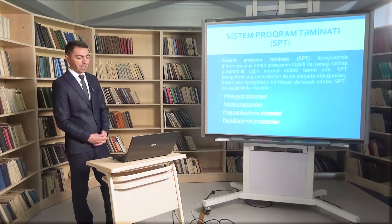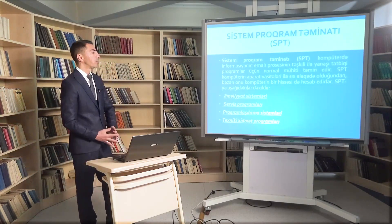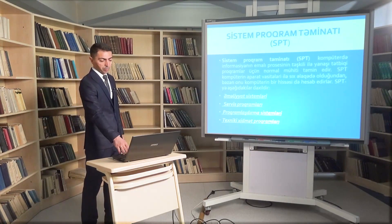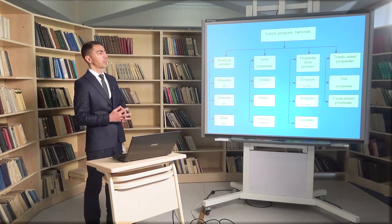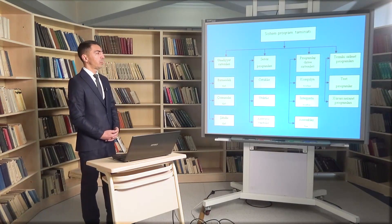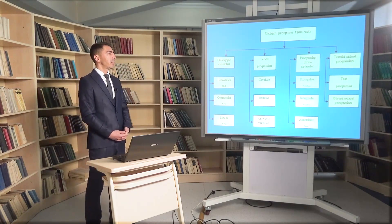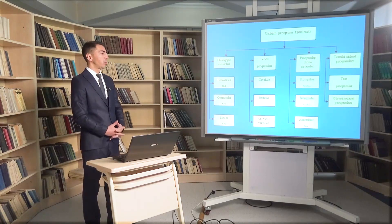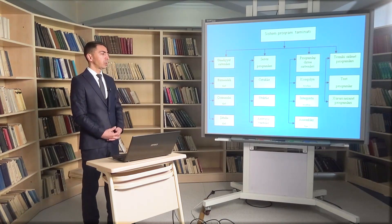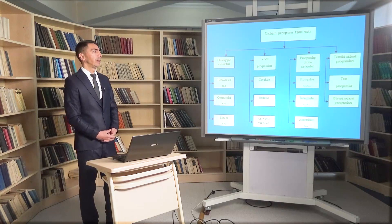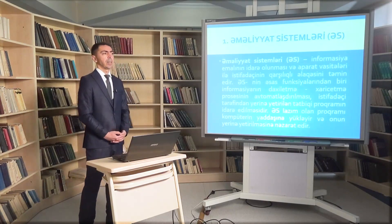Əsasən sistem proqram təminatına aşağıdakı bölmələr daxildir: əməliyyat sistemləri, servis proqramları, proqramlaşdırma sistemləri və texniki xidmət proqramları. Cədvələ nəzər salsaq, əməliyyat sistemlərinin alt bölmələrinə bir məsələli, çox məsələli, şəbəkə əməliyyat sistemlərini; servis proqramlarına örtüklər, utilitlər, antivirus vasitələr; proqramlaşdırma sistemlərinə kompilyator, interpretator və asembler; texniki xidmət proqramlarına isə test və xüsusi nəzarət proqramlarını aid edə bilərik.